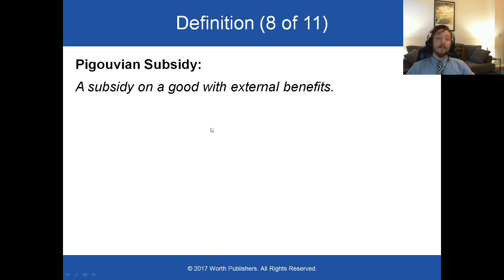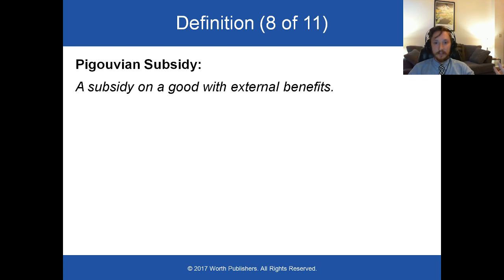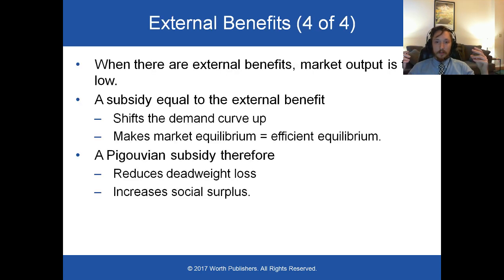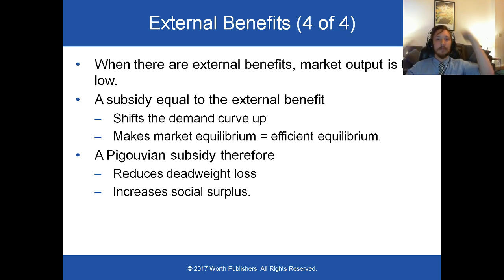When talking about external benefits, we can talk about the opposite: Pigouvian subsidies. Pigouvian subsidies are a subsidy on a good with an external benefit. When you have a subsidy equal to the external benefit of the good, it shifts the demand curve up and makes the market efficient. The new market equilibrium is the efficient equilibrium.